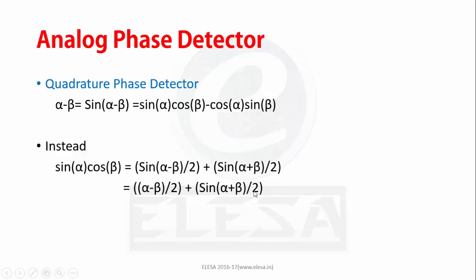The first term provides desired phase difference and the second term is a sinusoid at twice the reference frequency so it can be filtered out.